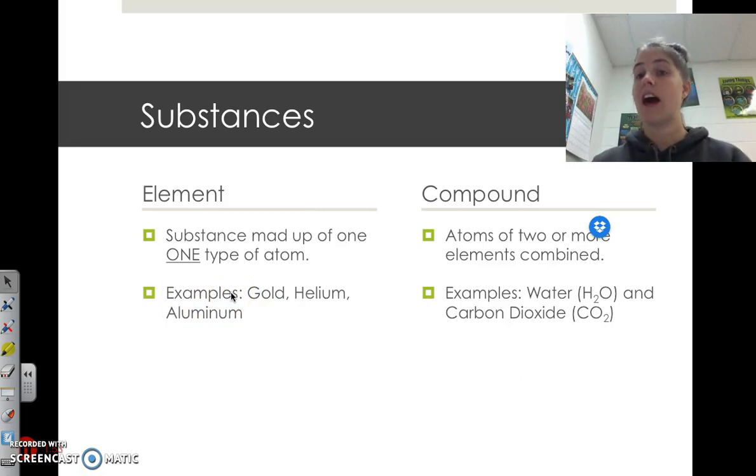That means there's a bunch of these atoms, but there's only one type of atom in a specific area, and that would be an element. It could also just be one atom of that specific element, and that would be considered an element.